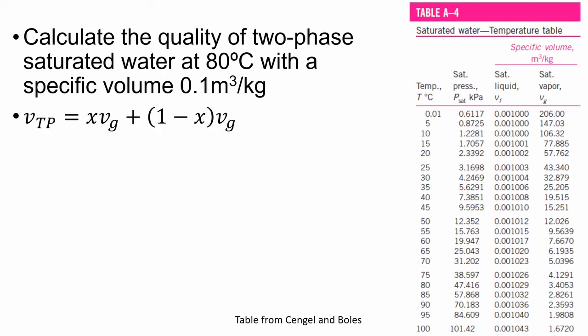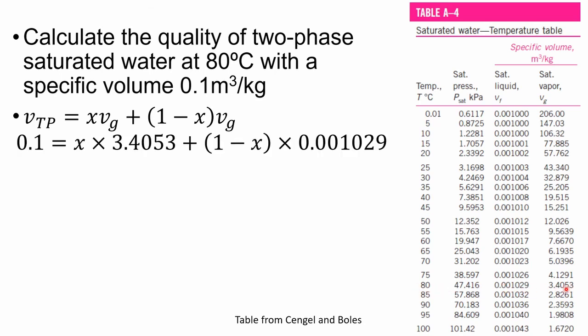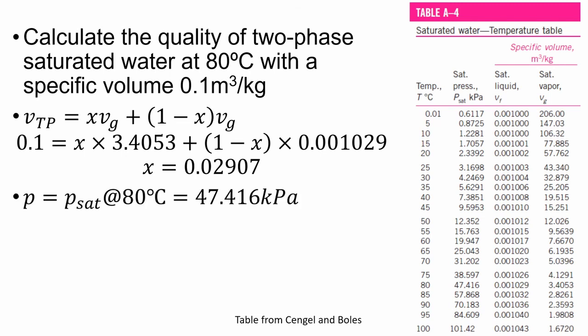We know we can calculate specific volume using this equation. And as we are told that this is a two-phase mixture, we can read the values of the saturated liquid water and the saturated vapor from the saturated water temperature table. So at 80 degrees, we have the two values that we need here. And we get an answer of 0.02907, which is between zero and one, which confirms that this is a two-phase mixture. And the pressure is therefore the saturation pressure of 47.416 kPa, and this can also be found in the table.